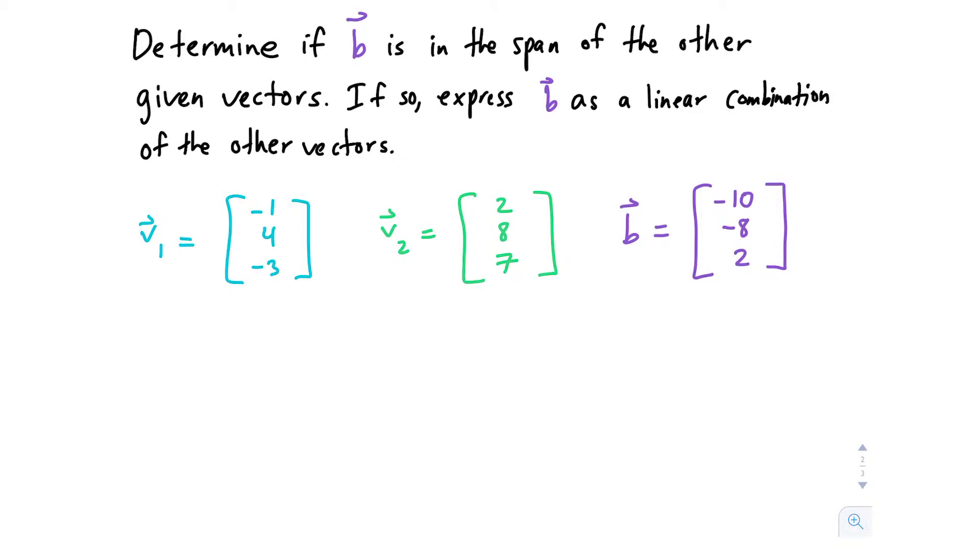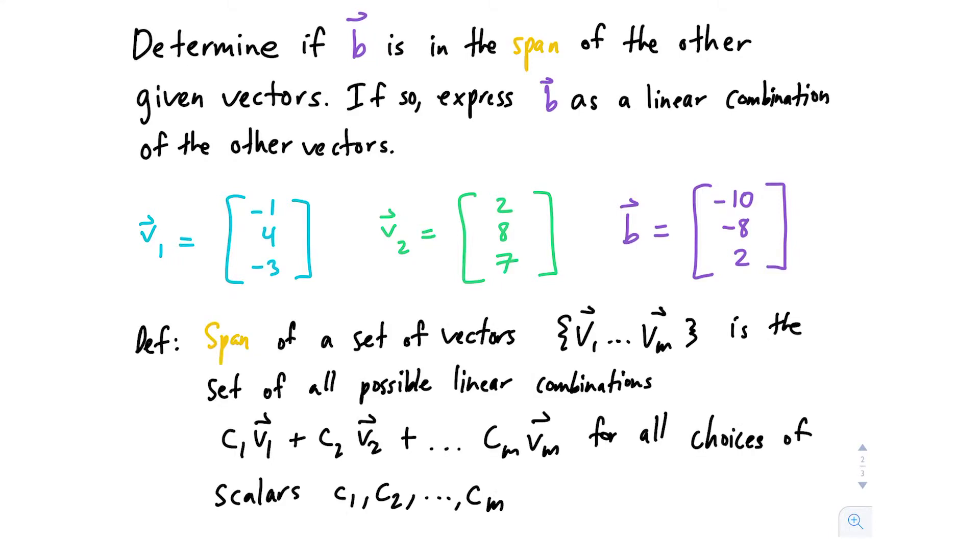We have another span problem. We've got vectors v1 and v2, and we have vector B. We're trying to figure out whether B is in the span of the other given vectors. Here's our definition of span: we want to find some sort of linear combination such that we multiply c1 times v1 and c2 times v2 and get B as our resulting vector.